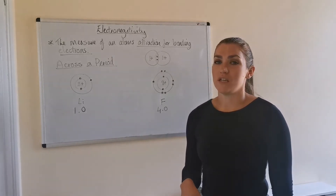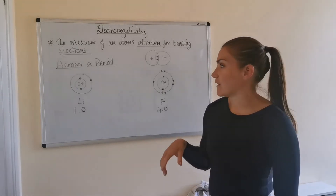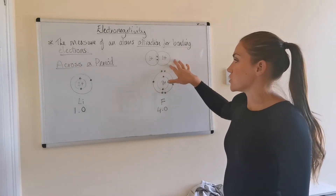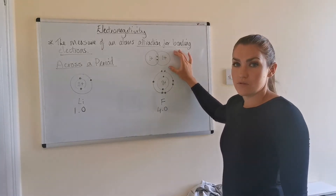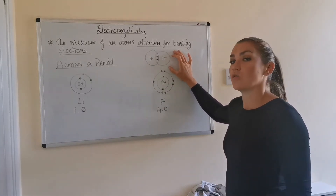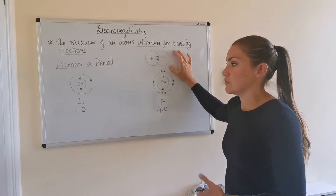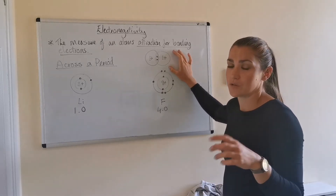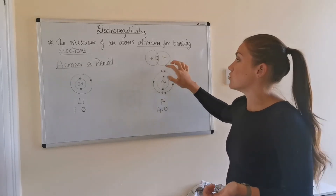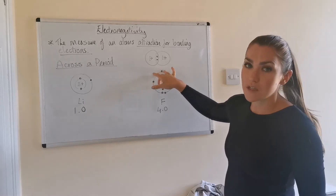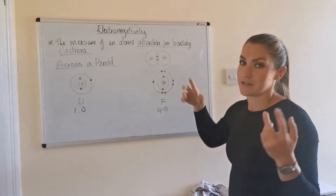However, when it comes to electronegativity, we're looking at the atom's attraction for bonding electrons. This takes us back to National 5 chemistry. I've drawn a diagram here of two hydrogen atoms joined together. In order to become stable, atoms will either form ions or they will form bonds with other atoms. Between two hydrogen atoms, it's a covalent bond because they are sharing a pair of electrons so that they can both have a stable electron arrangement.